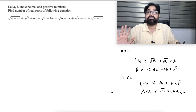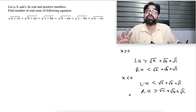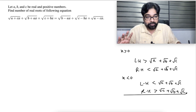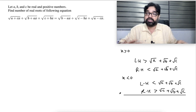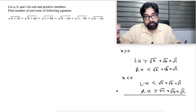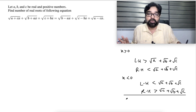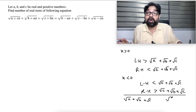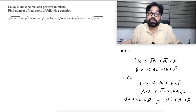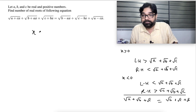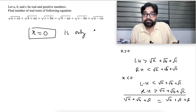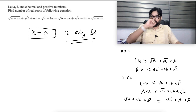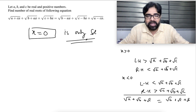Only one person is left — who is that? x equal to 0. Let's put x equal to 0. After 0, no roots. Before 0, no roots. Every hope is on 0. Put 0 — the left side becomes √A + √B + √C, and the right side becomes √B + √C + √A. Both are equal. Means x equal to 0 satisfies the equation. So x equal to 0 is the only solution. I hope everybody understood — it's a very simple question, not at all difficult.